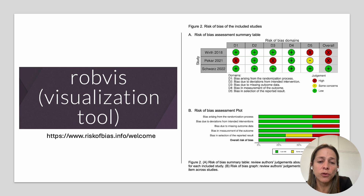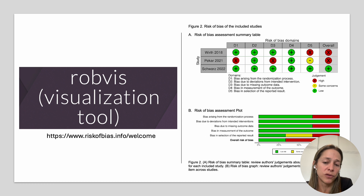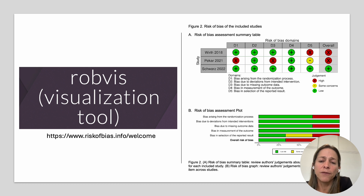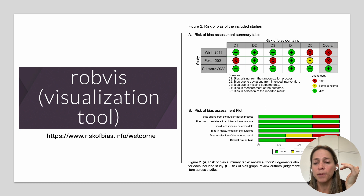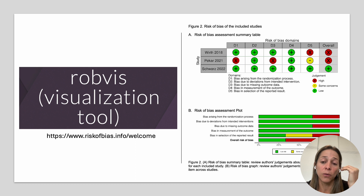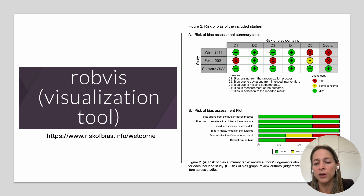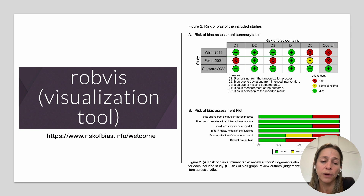Once you have assessed study quality, you will produce the risk of bias summary table and graph that you have probably seen in published systematic reviews. It provides a visual overview with low risk of bias in green, high risk of bias in red, and unclear in yellow, showing how many studies fall into each category. There is a free website available that allows you to create these graphs.